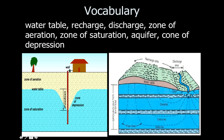A recharge area is an area where rain runs off into a stream or river and recharges it. The discharge area is the actual place where the river is running and moving from one location to the next. If you take water out from the discharge area you can eventually run out of water in the stream.